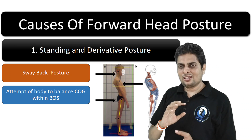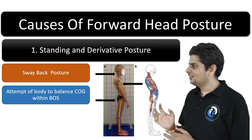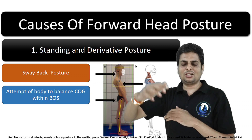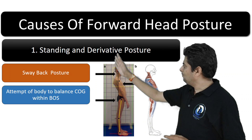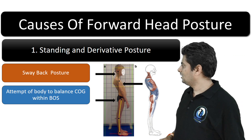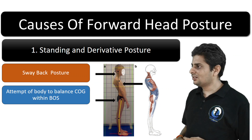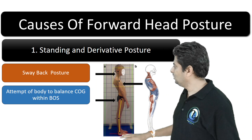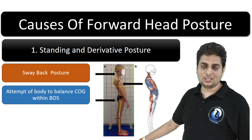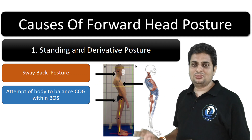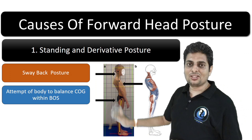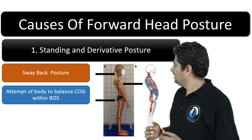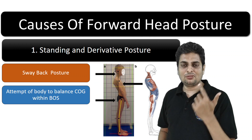In essence, these postural types are compensations — one segment over another — to balance the COG within the base of support. If we are intelligent enough, we can discover why the forward head is there by evaluating the sequence from the foot upward through the whole body in the sagittal plane. Once this is evaluated, it becomes easy to resolve the forward head posture.